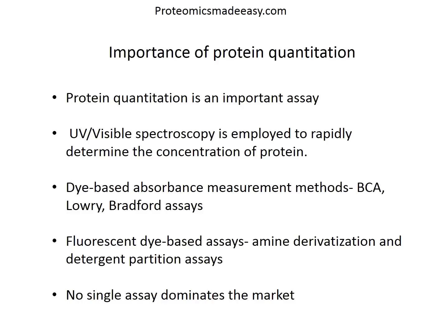As I mentioned in my previous video, UV and visible spectroscopy is used to rapidly determine the concentration of protein. There are many methods available, such as protein concentration measurement using UV spectroscopy, traditional dye-based absorbance measurement methods such as BCA, Lowry and Bradford assays, and the fluorescent dye-based assays, amine derivatization and detergent partition assays.